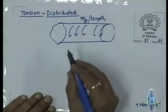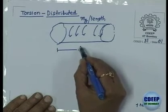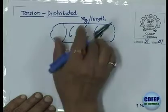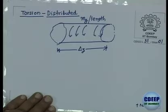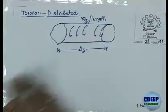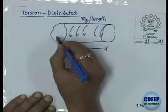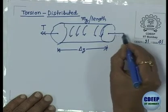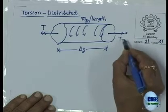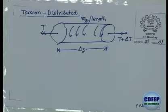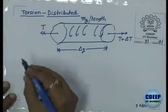How will you formulate this? If I take a small length dz, this is not the total length, only dz. As you move along the length, this cross-section and the next cross-section will have different torques. So this cross-section will have T and the next will have T plus delta T — T is not uniform throughout.